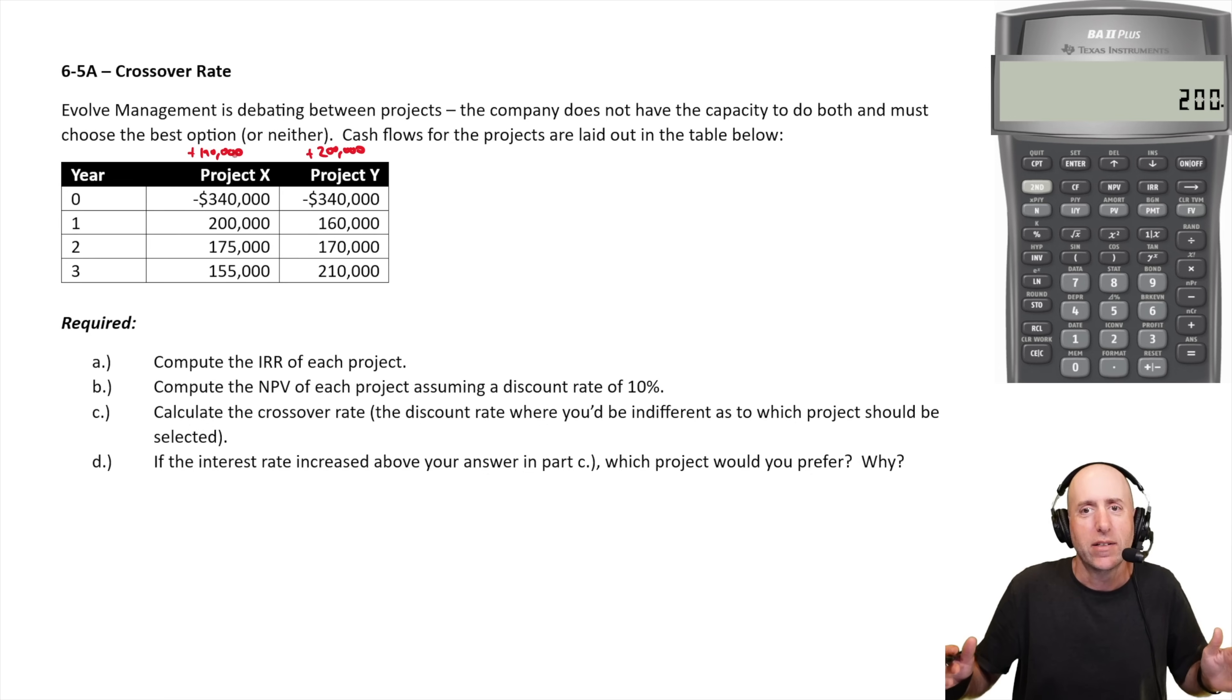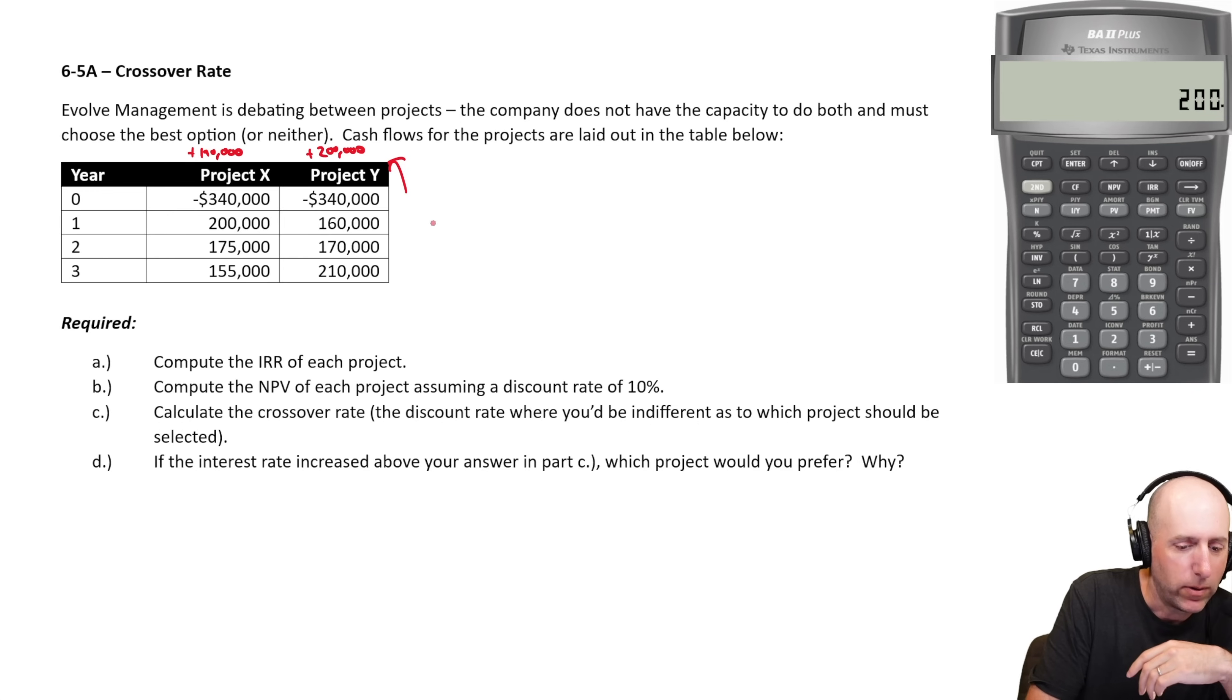What we'll find is if the discount rate is zero, in other words, there's no such thing as time value of money, project Y is way better. If the discount rate is high, like 20%, for sure, project X is going to be better because we're discounting the future cash flows and there's more future cash flows with Y.